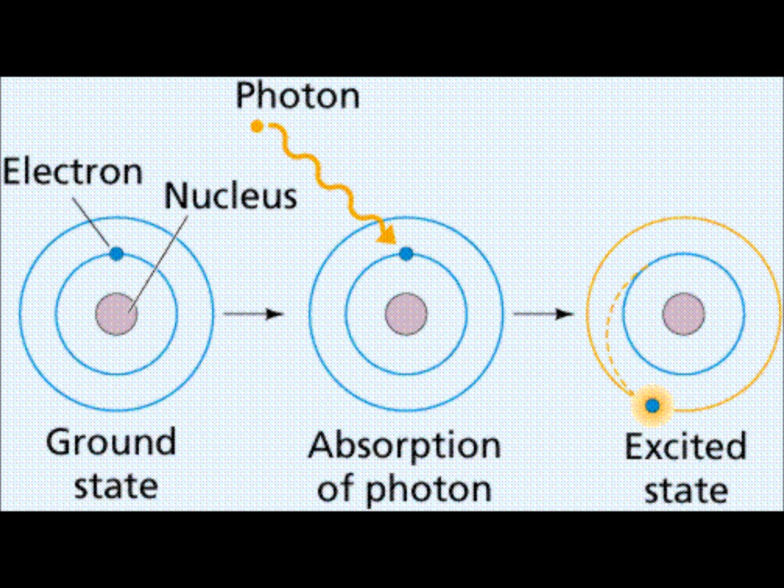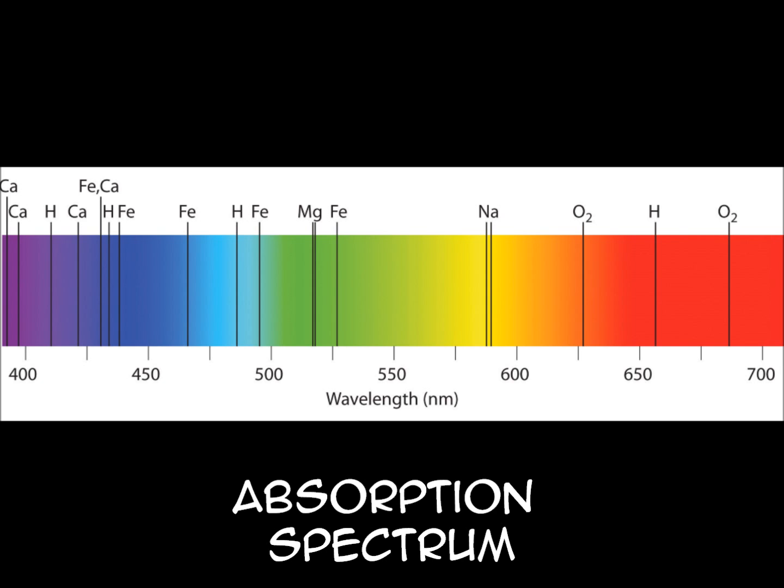Absorption spectra: At high temperatures, electrons become excited and jump into higher energy levels by absorbing radiation of a particular frequency. Electrons in gas atoms absorb certain frequencies of light, making gaps in the spectrum.